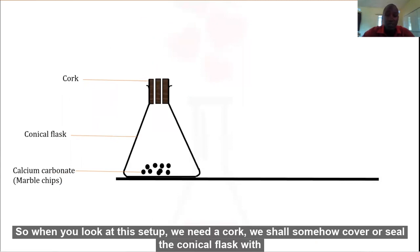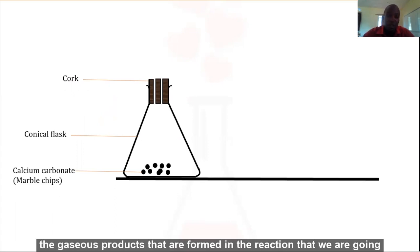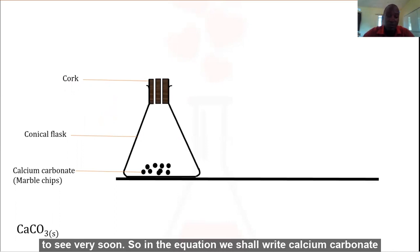When you look at this setup we need a cork. We shall cover or seal the conical flask with the help of a cork because it helps us retain the gaseous products that are formed in the reaction.